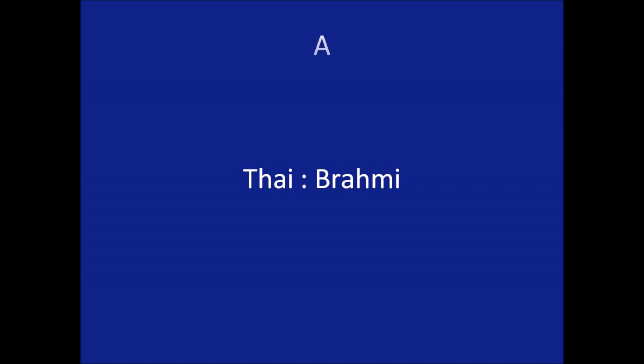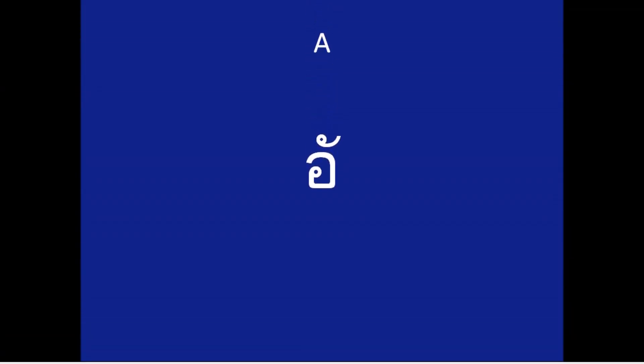In this lesson, the vowels will be taught by combining with a basic consonant. This vowel is used when it is not followed by a consonant while making a word. This vowel is used when it is followed by a consonant while making a word.